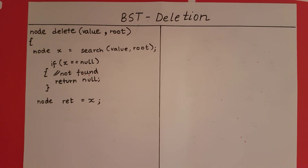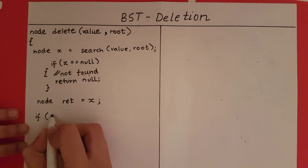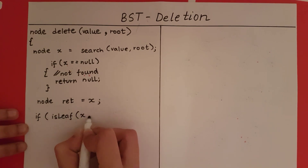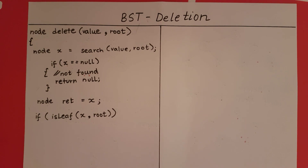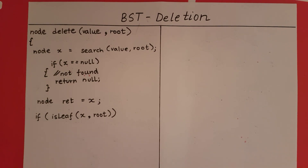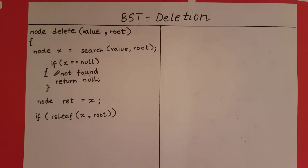Now that we have made a copy in ret and know what to send back, let's look at the three cases. The first case is x is a leaf node. We check: if isLeaf(x, root) — this is a function you can write externally. It checks whether x is a leaf node in the tree with this root. You can write this by simply checking whether x.left and x.right both equal null. If true, x is a leaf node.